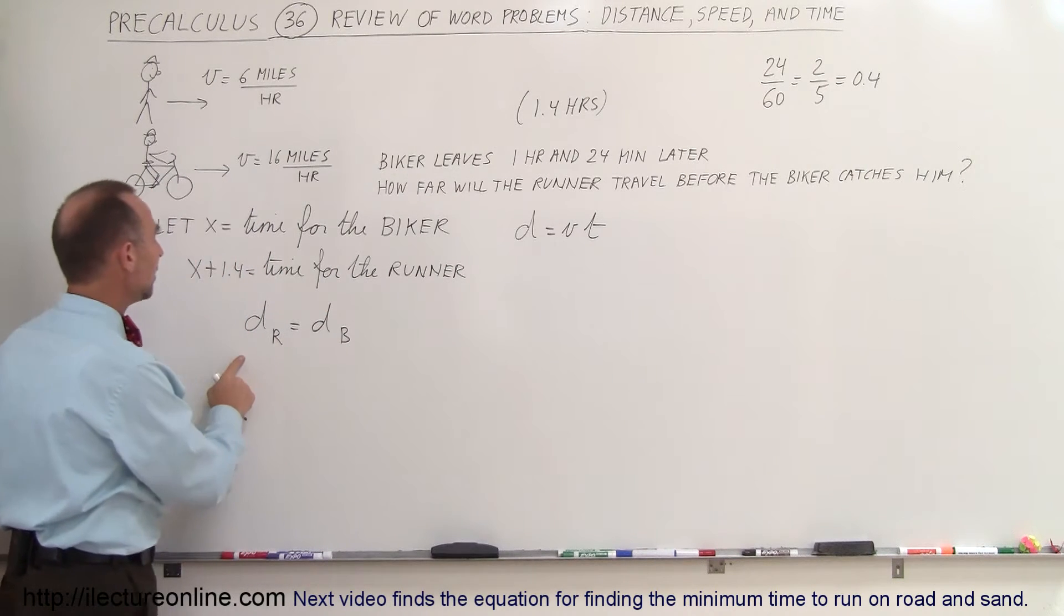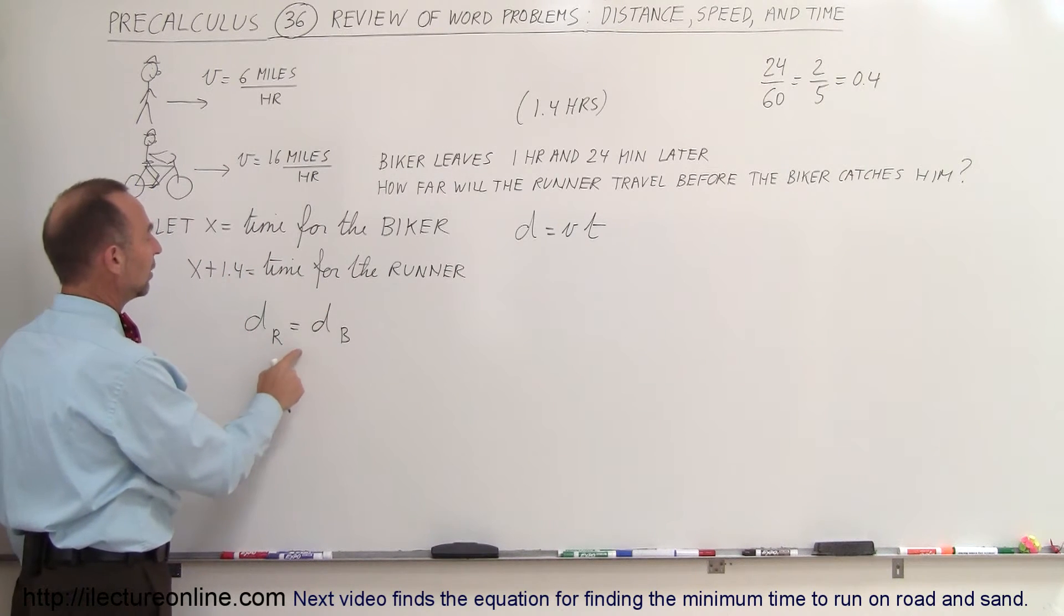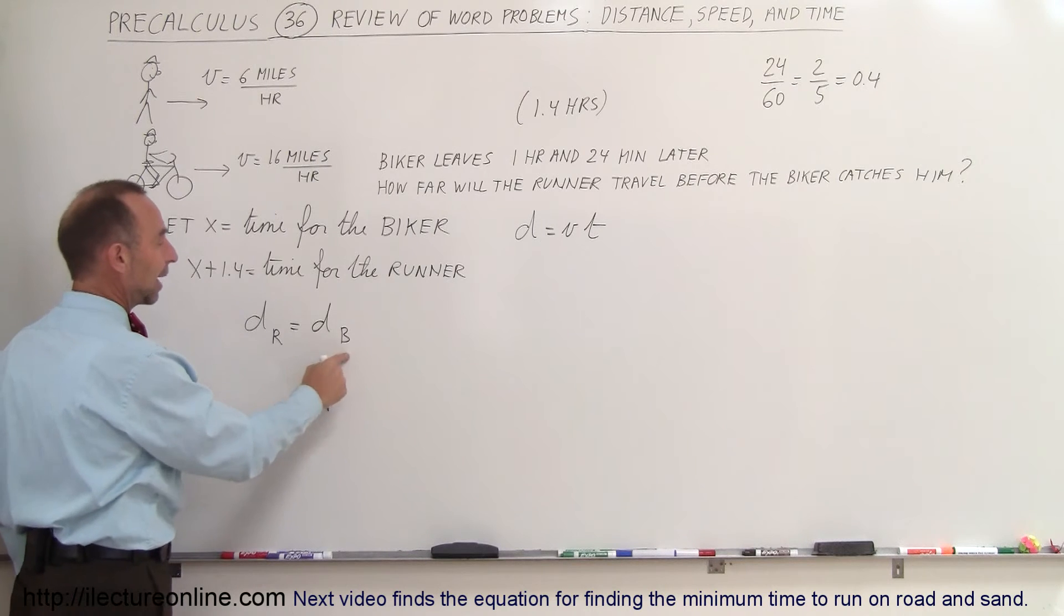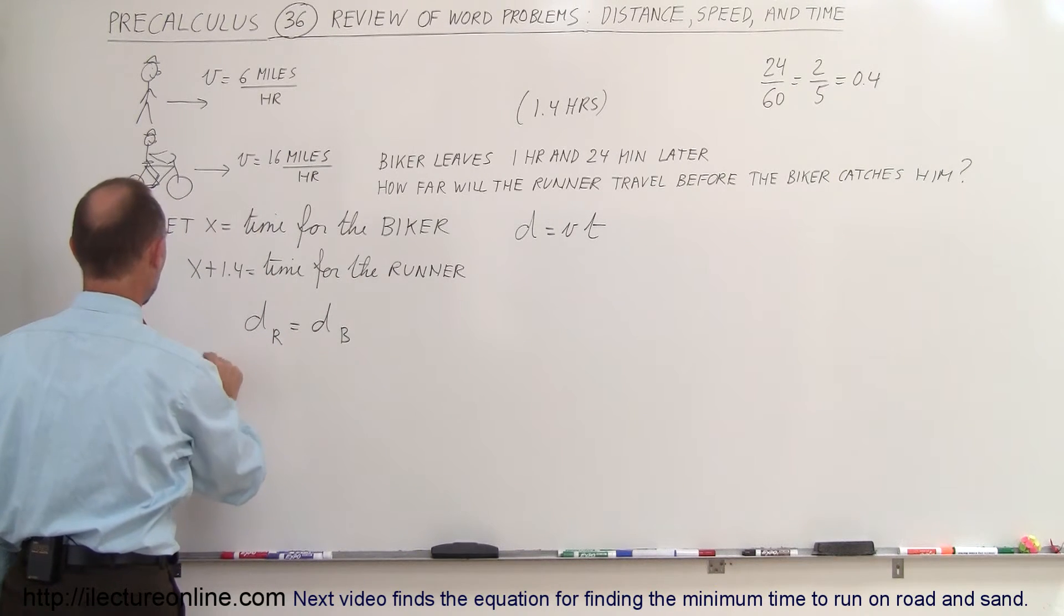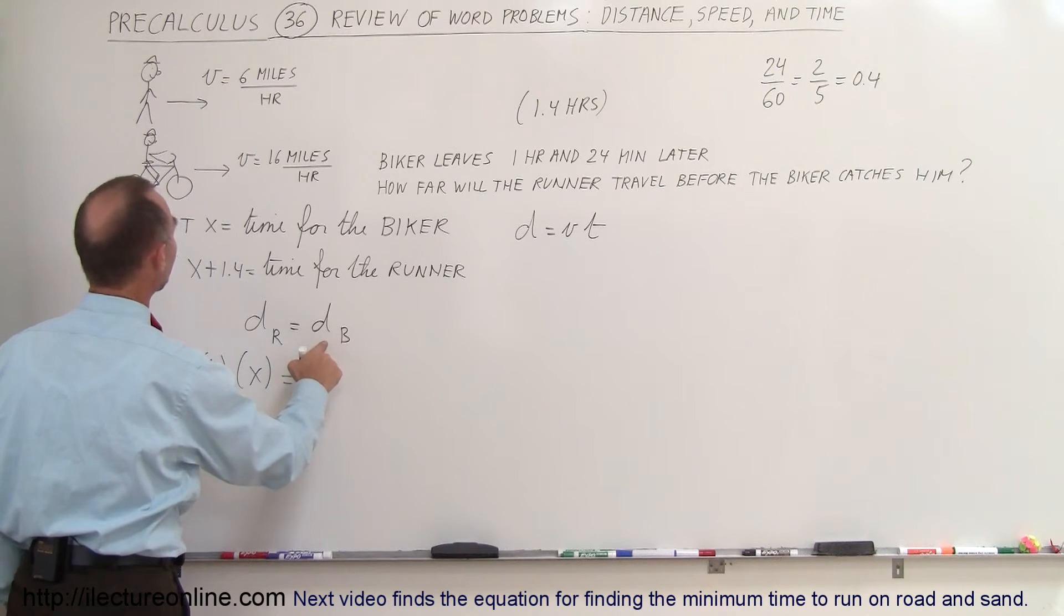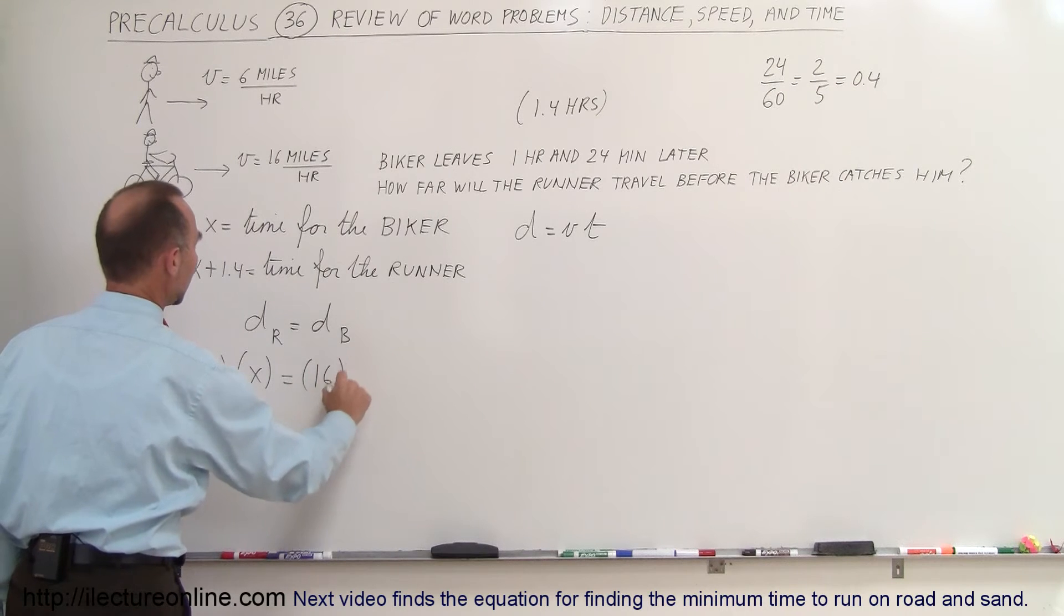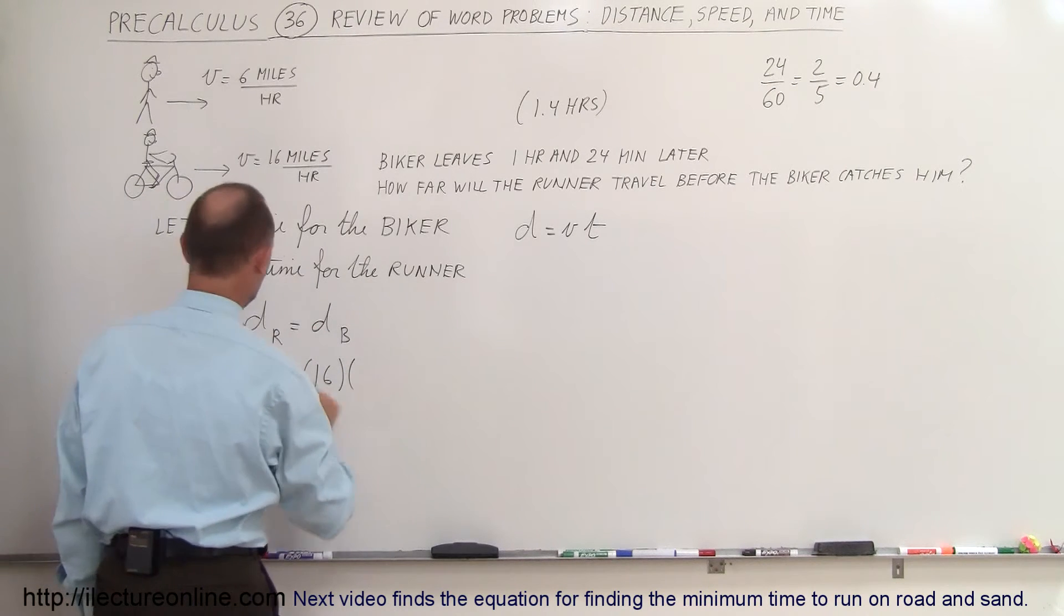So in this case, the speed of the runner times the time of the runner is equal to the speed of the biker times the time of the biker. So the speed of the runner is 6 miles per hour, and the time for the runner would be x. That equals the speed of the bike, which is 16 times the time for the bike, which would be...